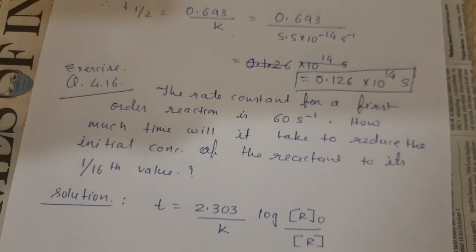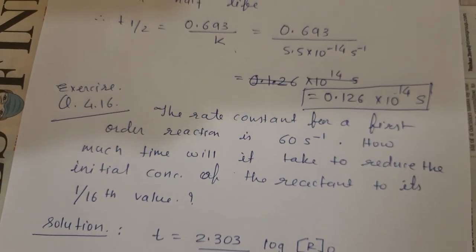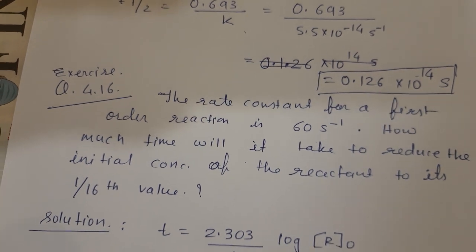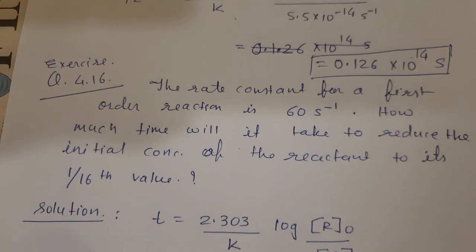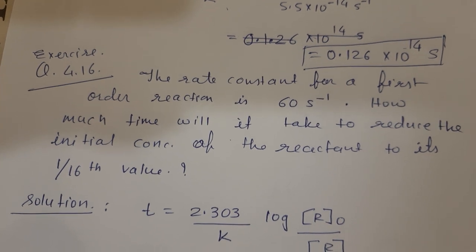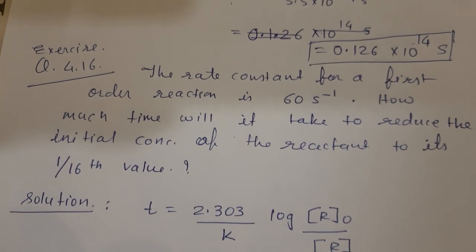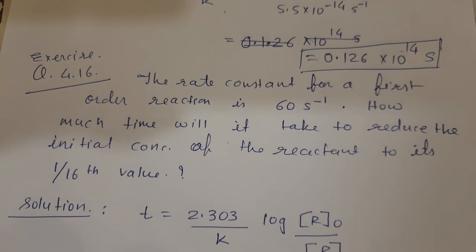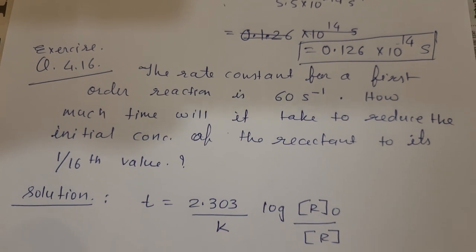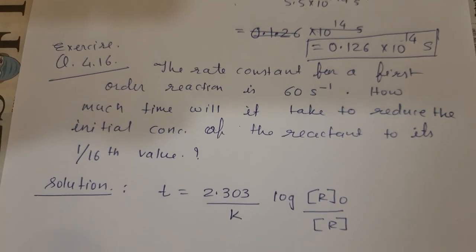Next is question 4.16 of the exercise. The rate constant for a first-order reaction is 60 second inverse. How much time will it take to reduce the initial concentration of reactant to its 1 upon 16th value?